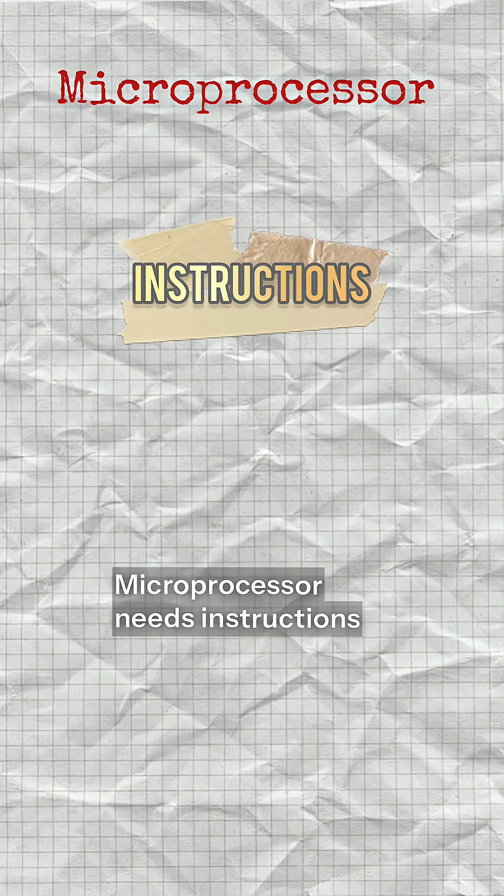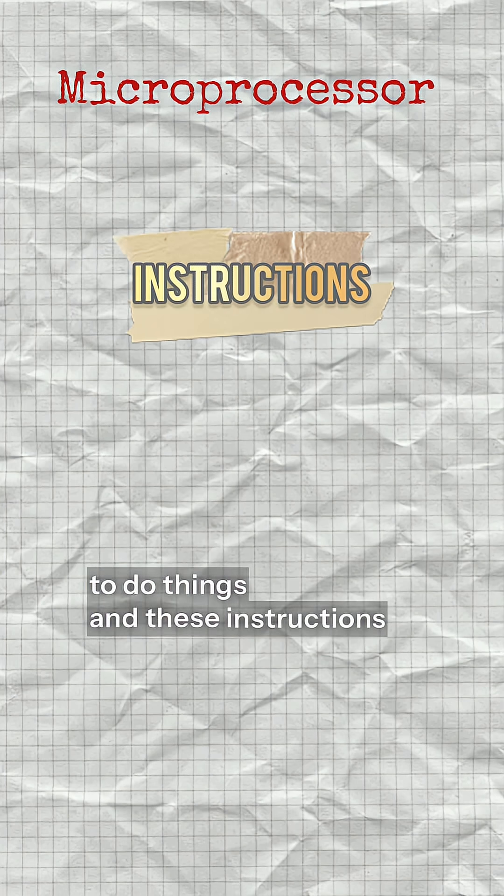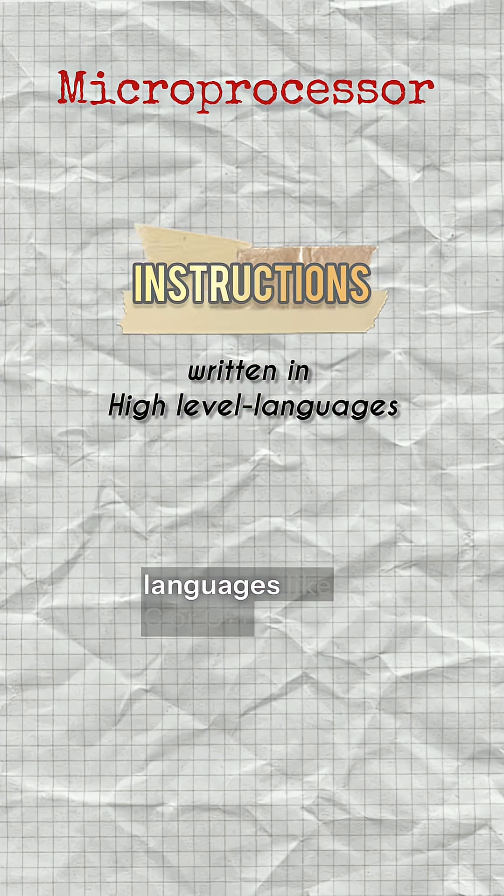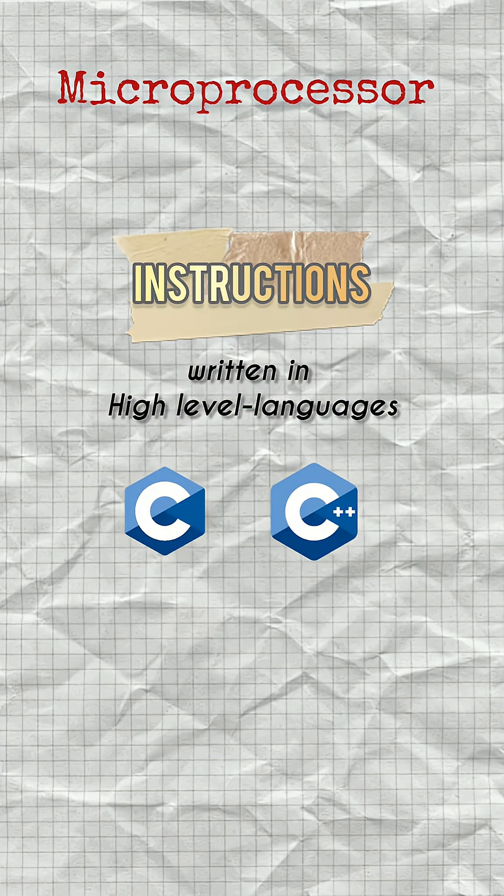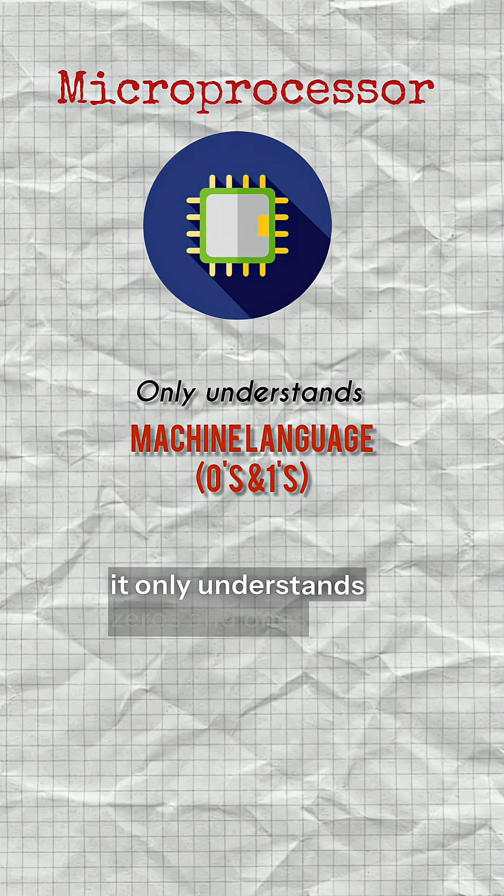Microprocessor needs instructions to do things, and these instructions can be written in high level languages like C or C++. Here's a catch: it only understands zeros and ones.